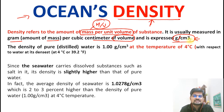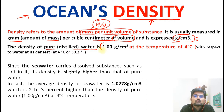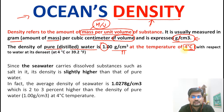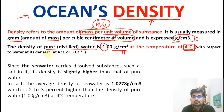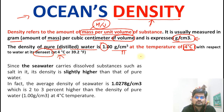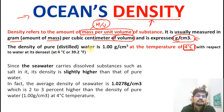When learning about ocean's density, the quantity is about water. The density of pure or distilled water is exactly one gram per cubic centimeter at four degrees C. We take this temperature because water is at its densest at four degrees C. So distilled water is one gram per cubic centimeter at four degrees C — that is important to remember.